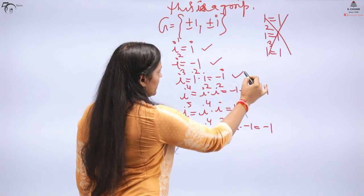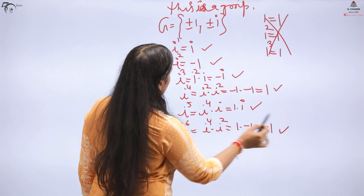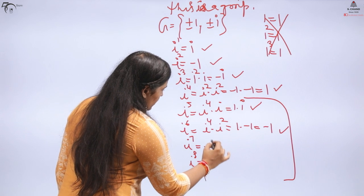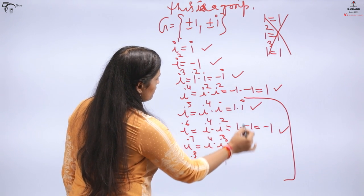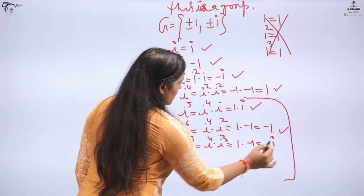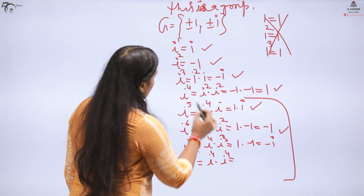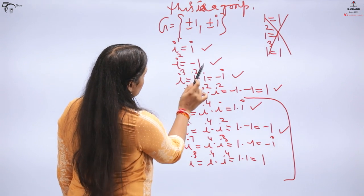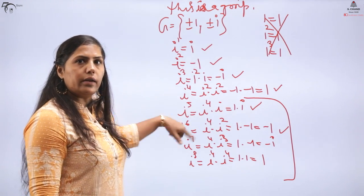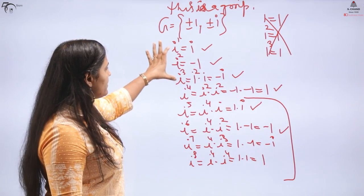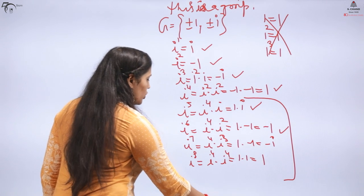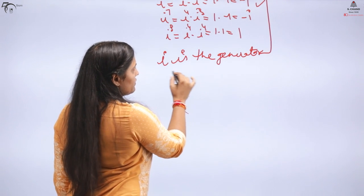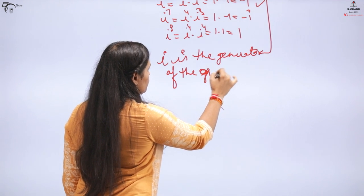Iota to power 1 is iota. Iota squared is -1. Iota cube is iota squared into iota, which is -1 into iota, equals -iota. What is iota to the power 4? Break it: iota squared squared. -1 into -1 is 1. Iota to the 5th? I will break this because I have iota 4 value already. So 1 into iota equals iota. Then iota 6: write iota 4 into iota squared. Iota 4 value is 1, iota squared value is -1, so it is -1. Can you see? Repetition started. Iota, -1, -iota, 1, iota, -1.